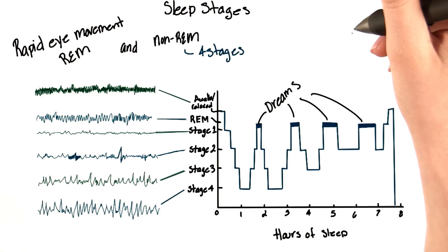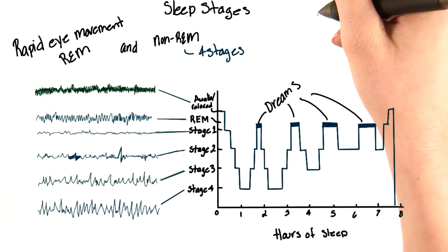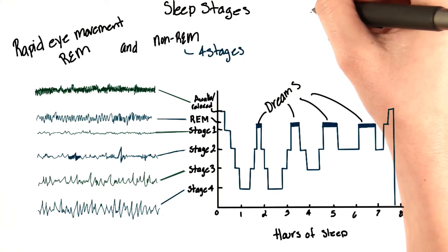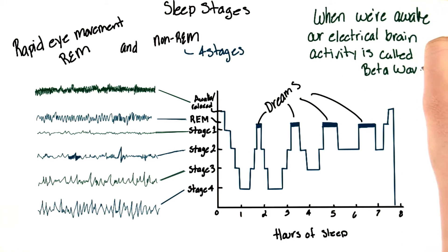Now, scientists have used EEG machines to record our brain waves while we sleep and while we're awake. When we're awake, our electrical brain activity is called beta waves.